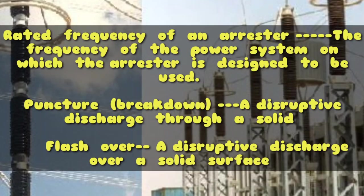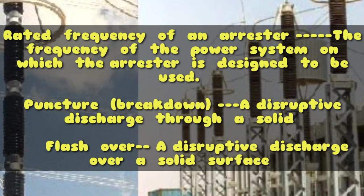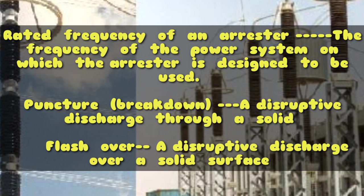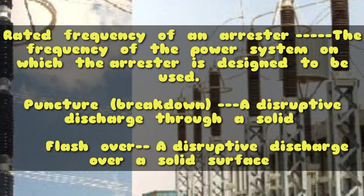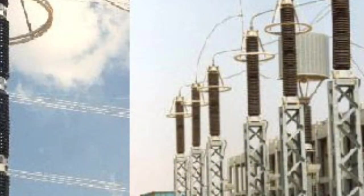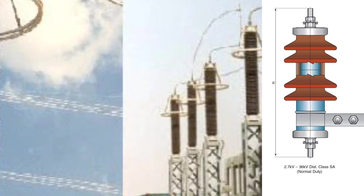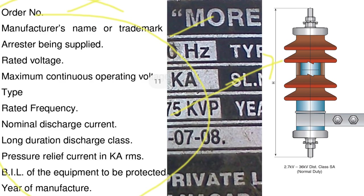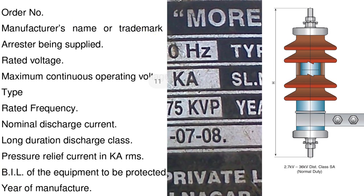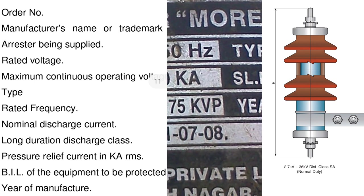Rated frequency of an arrestor is the frequency of the power system on which the arrestor is designed to be used. Puncture: breakdown — a disruptive discharge through a solid. Flashover: a disruptive discharge over a solid surface. Residual voltage is the voltage that appears between the line terminals and earth of an arrestor during the passage of discharge current. Here are the list of specifications mentioned on the nameplate — every information required for rating the lightning arrestor, but mainly voltage in KV is used as its main function is to mitigate overvoltage.